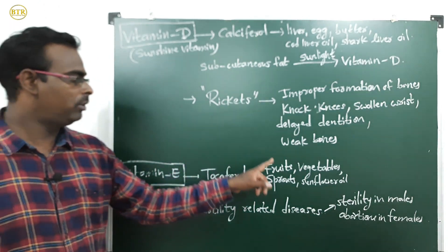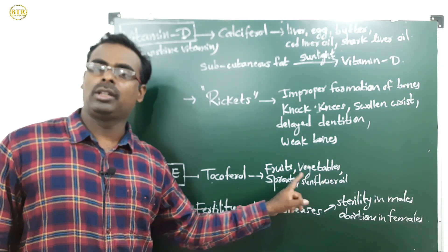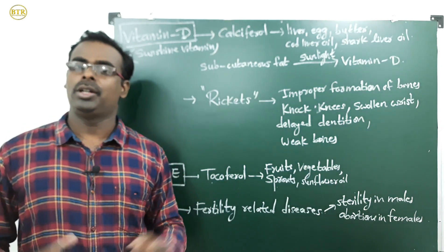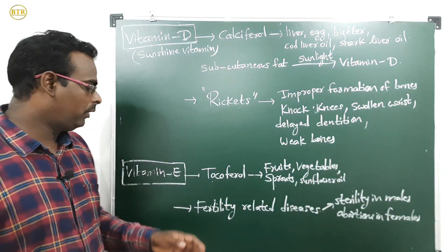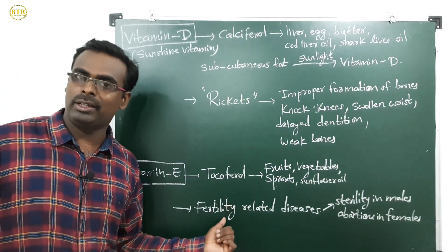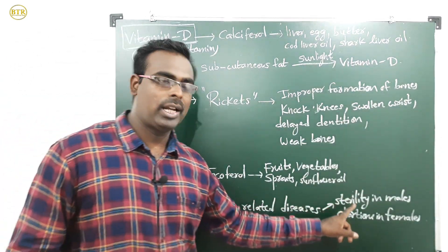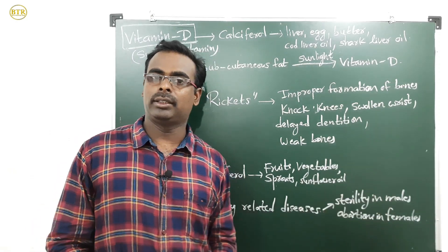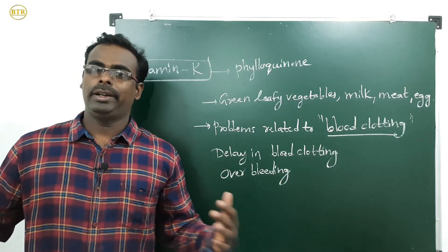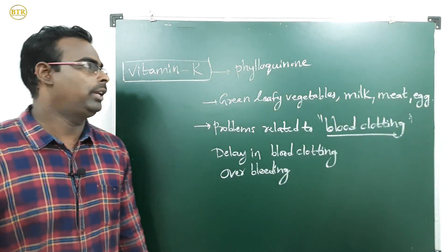The third fat-soluble vitamin is vitamin E, with scientific name tocopherol. It is available in fruits, vegetables, sprouts, and sunflower oil. Deficiency of vitamin E causes fertility-related diseases — sterility in males and abortions in females.